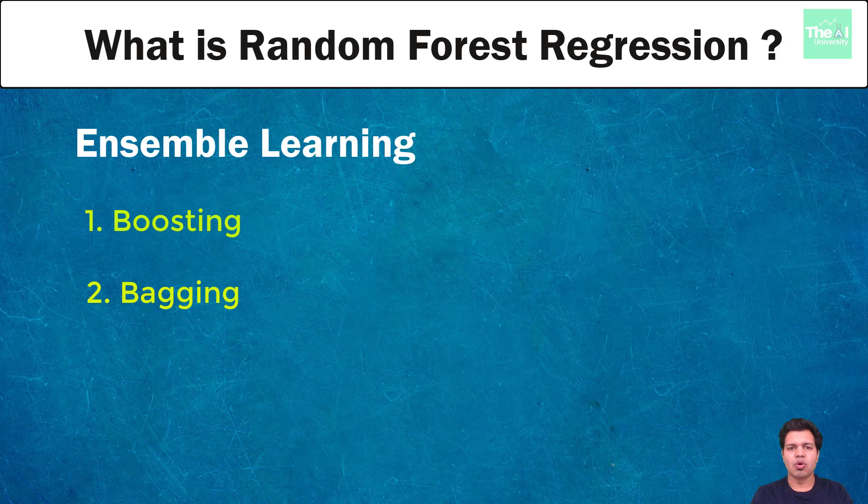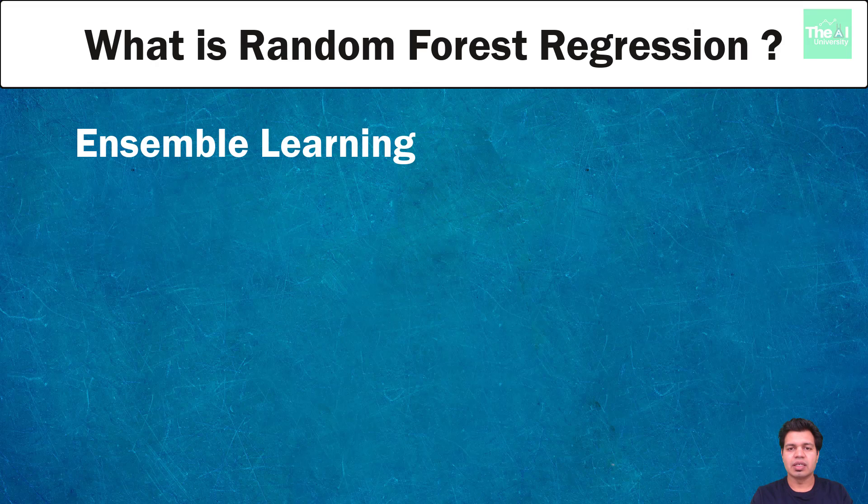Consecutive trees or random samples are fit and at every step the goal is to improve the accuracy from the prior tree. Bagging on the other hand is used to create several subsets of data from training sample chosen randomly with replacement. Each collection of subset data is used to train their decision trees. The reason I highlighted these two techniques here is that random forest is a bagging technique.